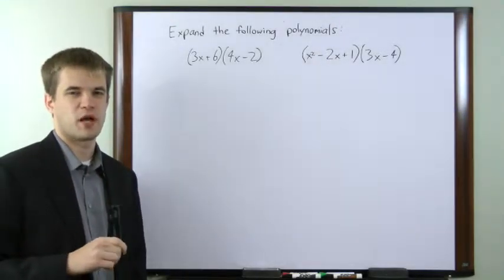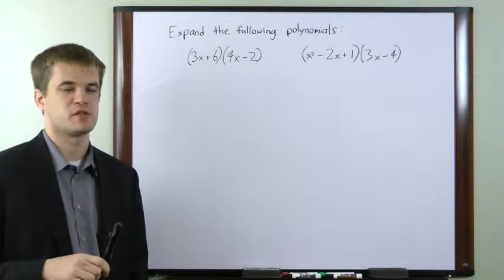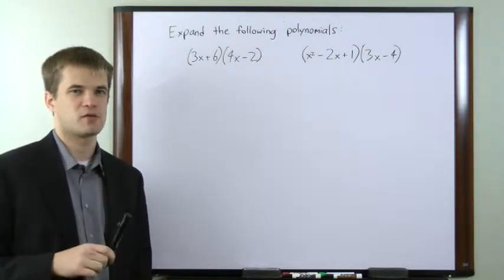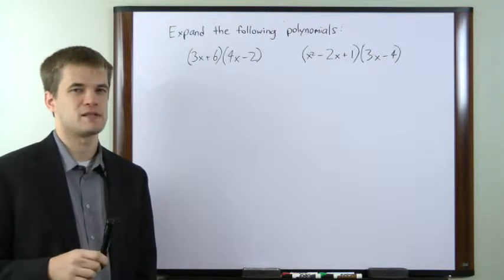The most common method for multiplying a pair of two-term expressions is called the FOIL method. FOIL stands for first, outside, inside, and last.